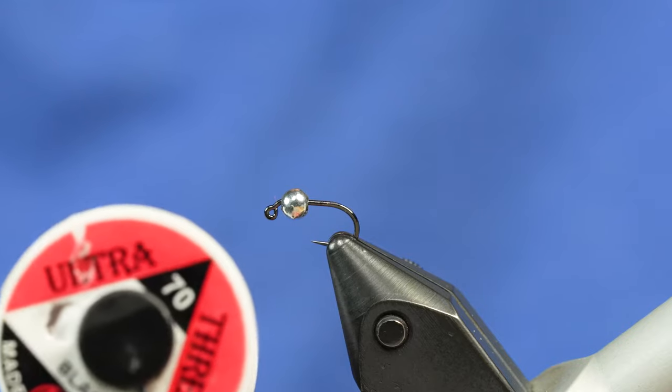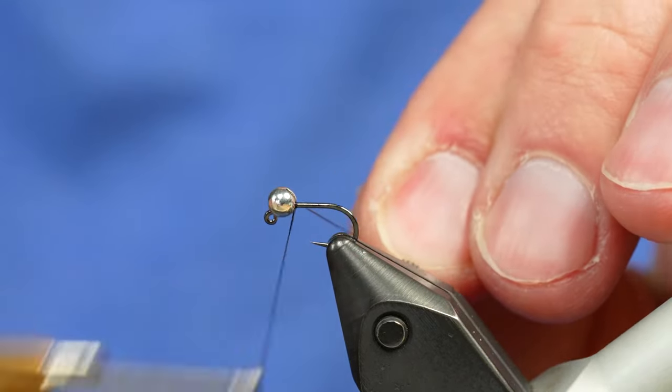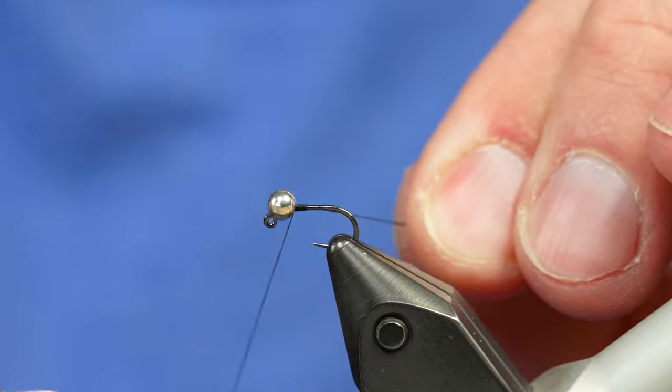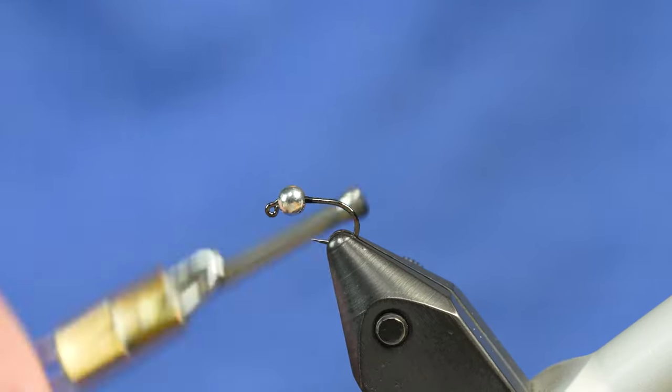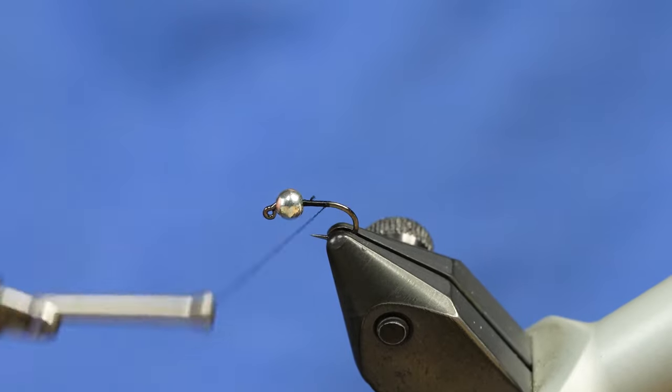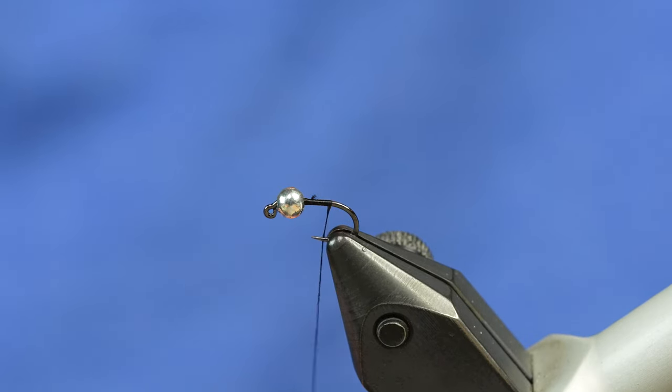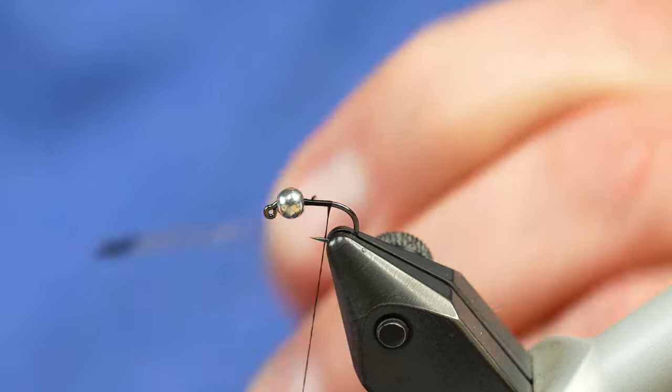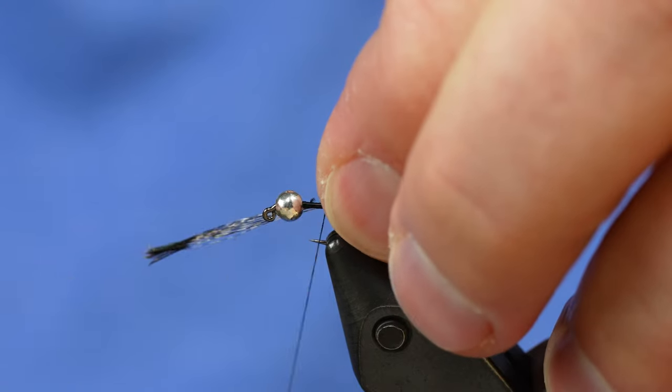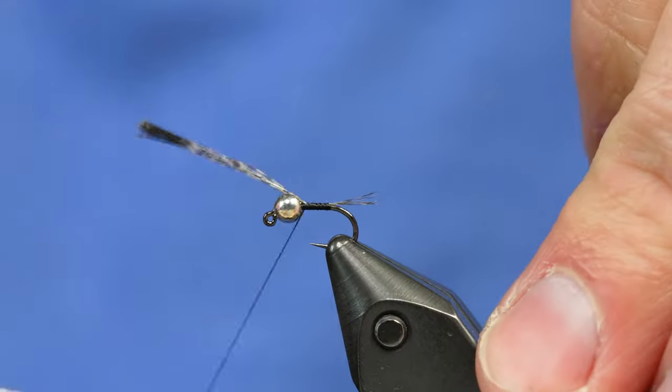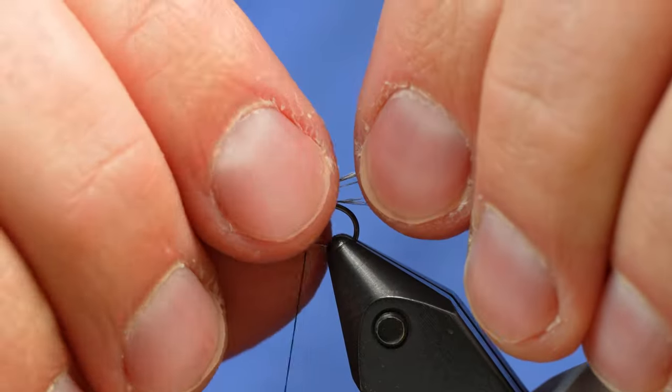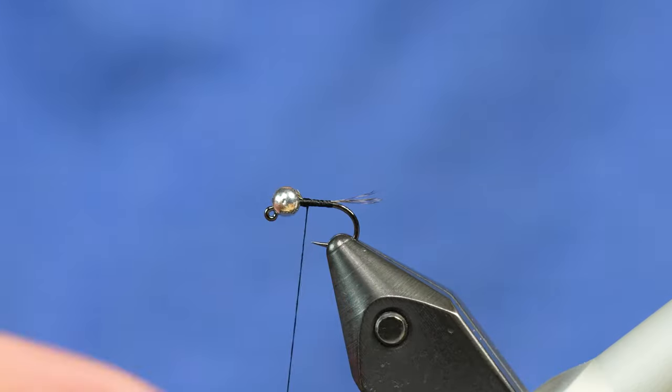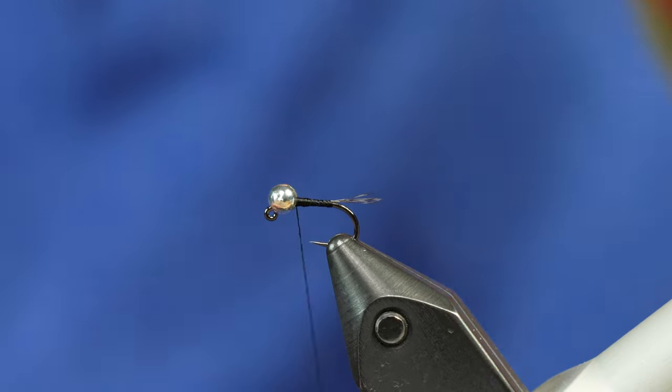We're going to use 70 denier black thread. Any thin black thread would work just fine. I'm going to start the thread just behind the bead here, get rid of the excess, work down the shank. And as you might expect with a Thread Frenchie, this is going to be a simple one. We're going to take some Coq de Leon and tie us in a tail. Measure that up, tie it in. And while I'm wrapping the thread, I'm basically building the body as well. So I'm trying to keep it relatively uniform.